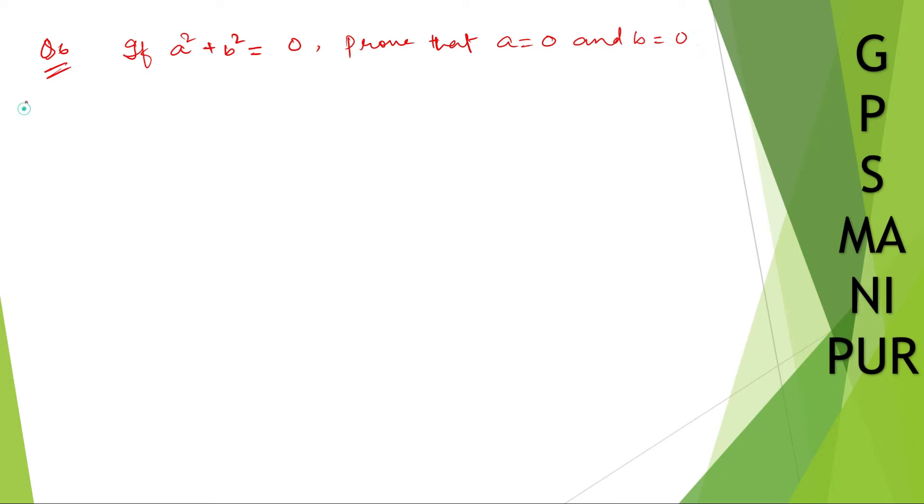Solution. Now the question says, given that a² + b² = 0, we need to prove a = 0 and b = 0.